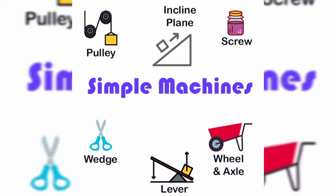Hi children, welcome back to the class which is discussing about simple machines. Now let us see how a machine functions. Machines usually multiply the applied force or effort. Some machines can change the direction of the applied force.